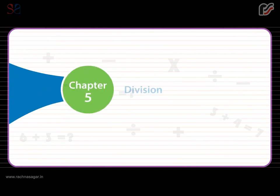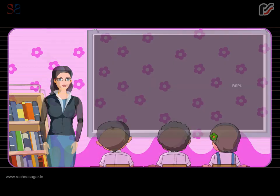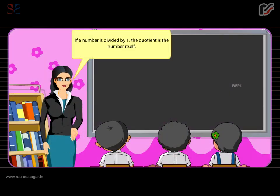Chapter 5: Division. Properties of Division. If a number is divided by 1, the quotient is the number itself.